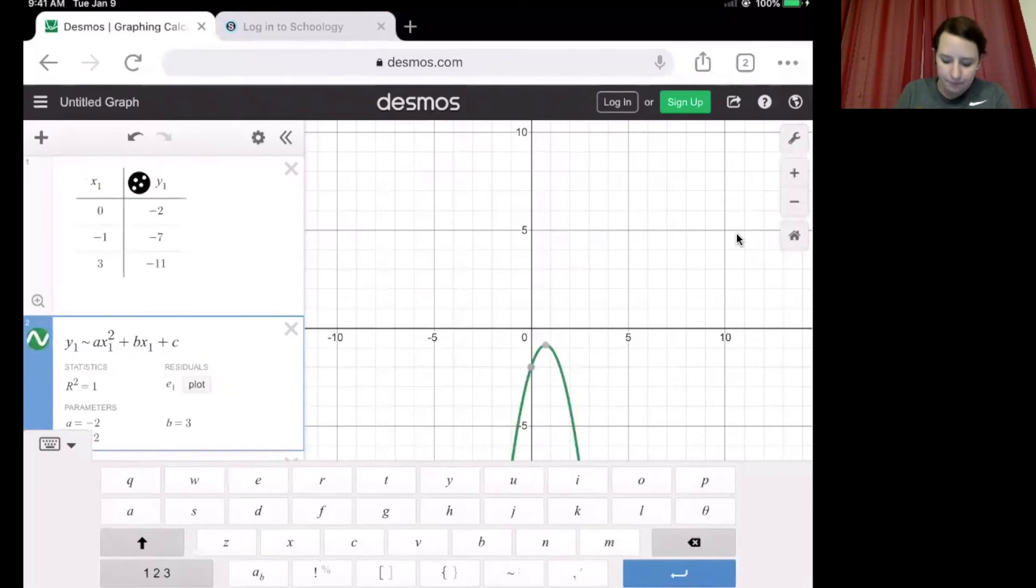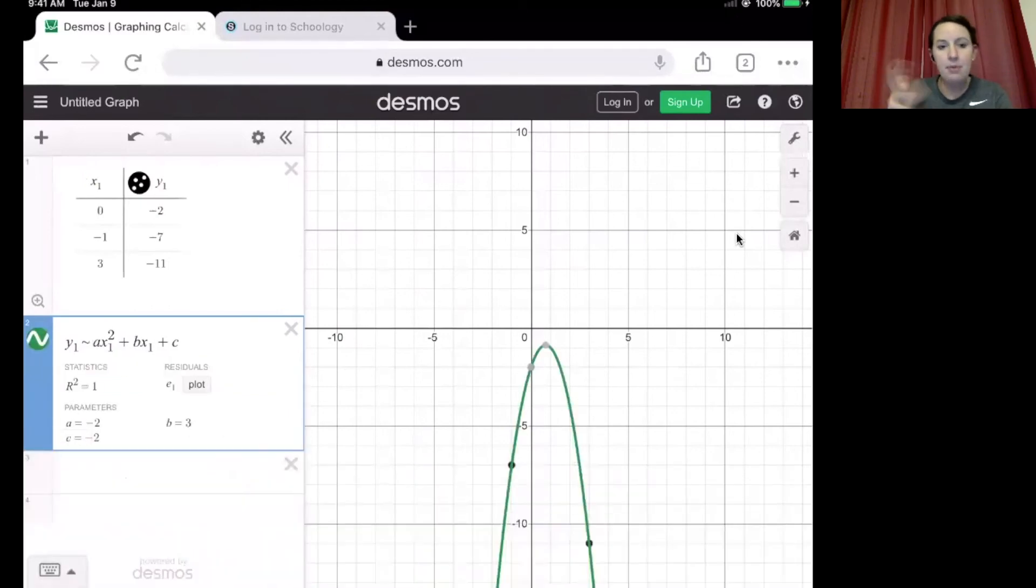Once we do that, you'll see that the parameters or the variables pop up. So it tells me that I have an a value of -2, a b value of 3, and a c value of -2.